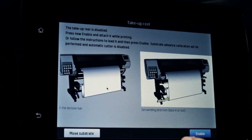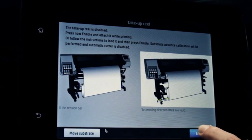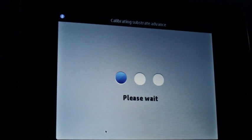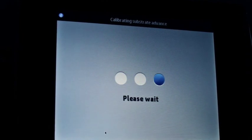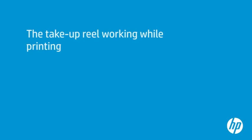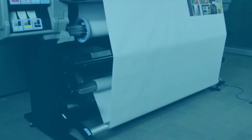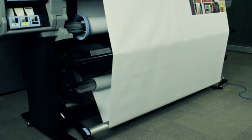Tap the enable button on the front panel to finish the load process. If you have a Latex 360 printer, it advances and calibrates the substrate. This is how the take-up reel works while the printer is printing.